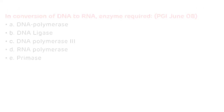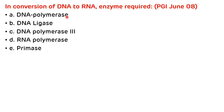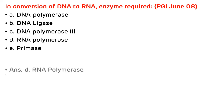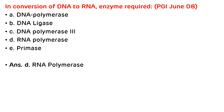Another question from PGI June 2008: in the conversion of DNA to RNA, which enzyme is required? Options are DNA polymerase, DNA ligase, DNA polymerase 3, RNA polymerase, and primase. The correct answer is RNA polymerase, which is required for the synthesis of RNA from DNA — the transcription process.